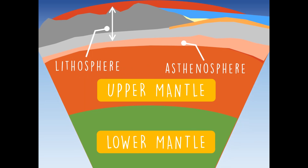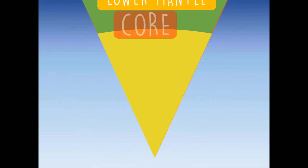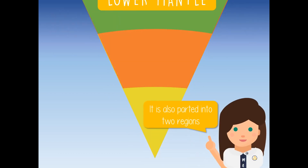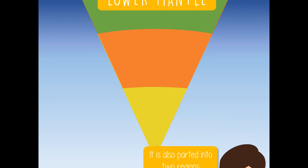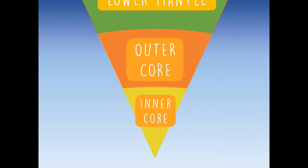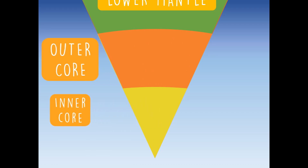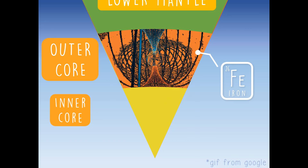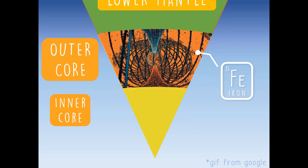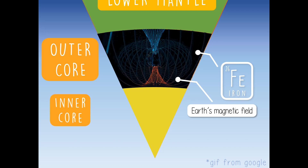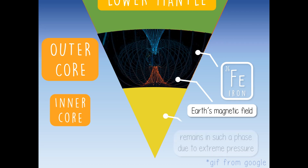Lastly, we have the core, which is the deepest portion of the earth and is composed of iron and nickel. It is parted into two regions based on their physical properties: the outer and inner core. The outer core represents the liquid portion of the core, wherein there is a movement of iron. It is believed that the movement of iron generates the earth's magnetic field. The solid inner core remains in such a phase due to extreme pressure.